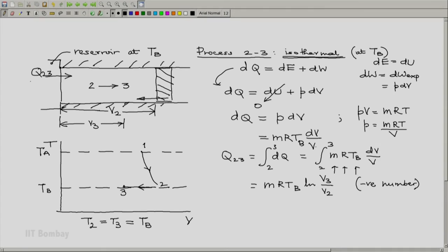In our engine nomenclature, we need Q rejected, which is the heat rejected by this system. So Q rejected by the engine working using this Carnot cycle will be minus Q23, which will be mRTB logarithm of V2 by V3, which will be a positive number. Again, we will make use of this expression later.